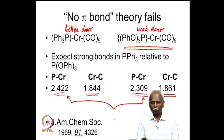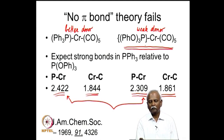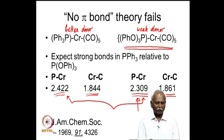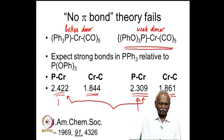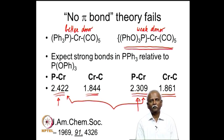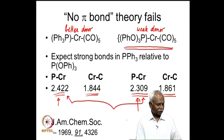P(OPh)3 is a better electron-withdrawing group, so it forms better pi bonds between phosphorous and chromium. If pi bonding is present, then the P–Cr bond would be shorter for the phosphite, exactly as observed. The phosphorous-chromium bond is short for the phosphite complex and longer for PPh3 where pi interaction is poorer. The pi bond theory explains the bond distance changes whereas the sigma-bond-only theory cannot.